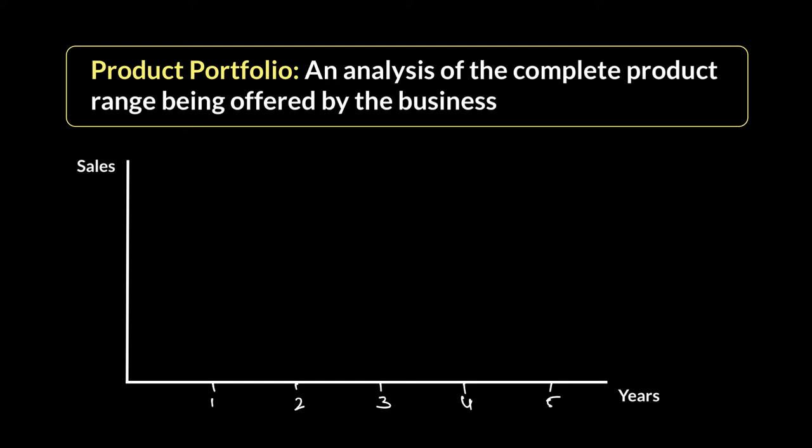Whenever you see the word portfolio, it simply means a collection of things. When you have a lot of photographs taken for a photo shoot, that's called a photo portfolio. When you have lots of investments in different places — stock market, bond market, property, gold — we call that an investment portfolio. Similarly, a product portfolio is a collection of products, meaning it's the complete range of products that a company is selling.